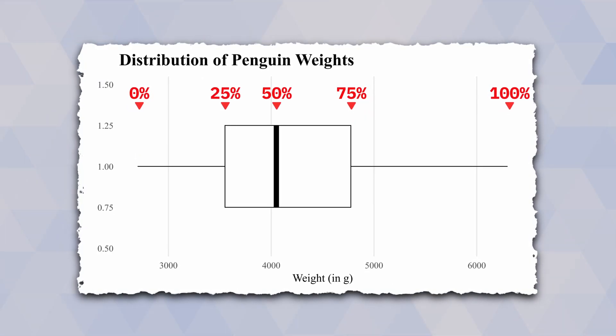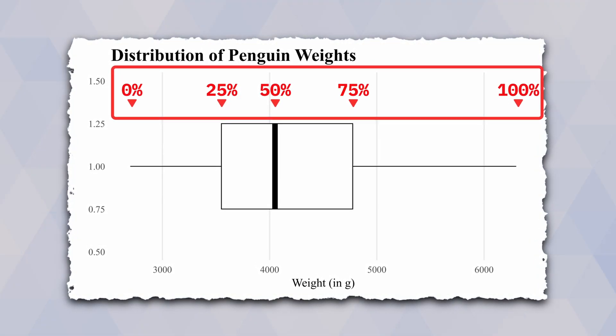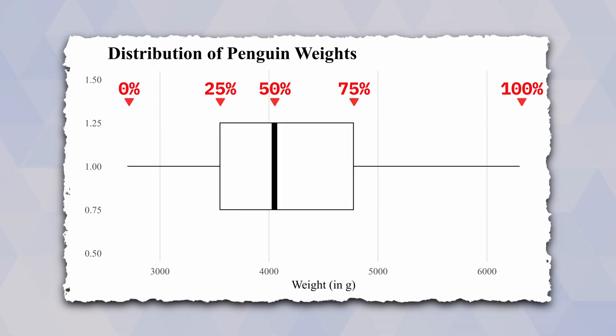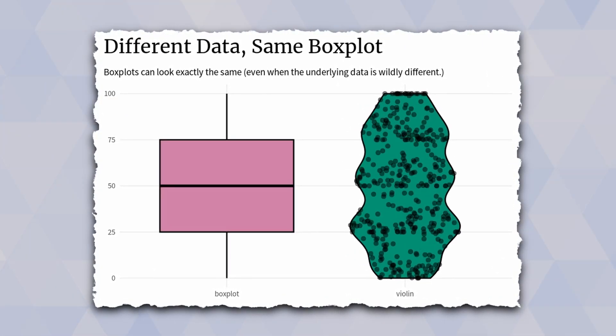The thing is, as long as these key points—0%, 25%, 50%, and so on—as long as these key points are the same, the boxplot will also look the same, because the boxplot only takes these key points into account.